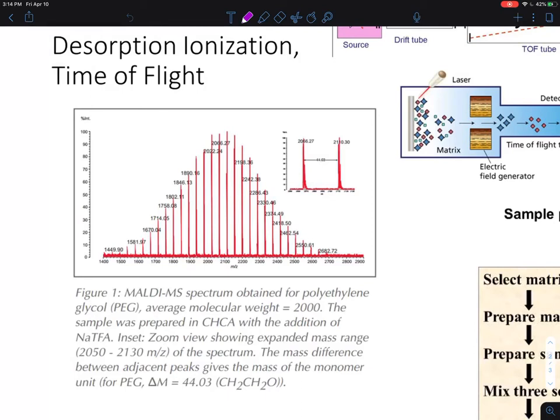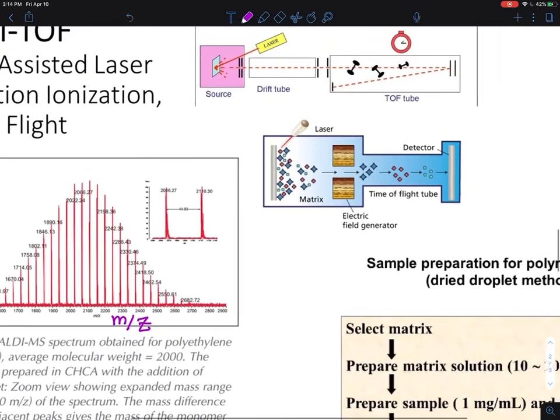The equal spacing here is about 44 grams per mole. This is a really nice way to accurately measure the molar mass. This is an absolute mass, though it's a mass per charge ratio, M over Z. That's something you should remember.